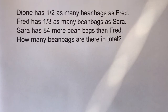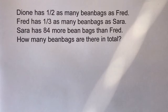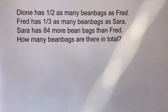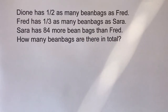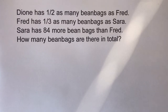In this video we're going to be looking at continuing the playlist on bar modelling. One of the difficulties with this question is actually understanding the English part of it. We're going to read it through, but when we come to tackling the particular problem we're going to do it a little bit at a time. So Dion has half as many bean bags as Fred. Fred has a third as many bean bags as Sarah. Let's start to model it a little bit.